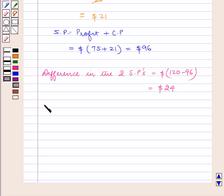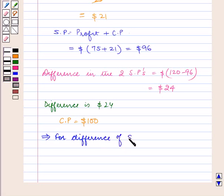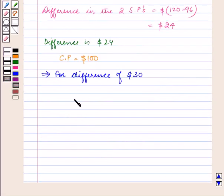So when the difference is $24, cost price is $100. This implies for a difference of $30, cost price equals (100/24) × $30 = $125.